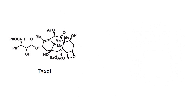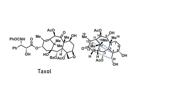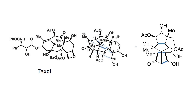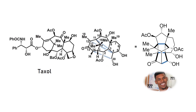What happens if we up the ante? Take the already colossal Taxol framework and introduce three random additional carbon-carbon bonds between centers. What might remind you of the houses that you drew without lifting your pencil when you were a small child is actually a legitimate molecule called Canataxpropellane, first isolated from the needles of the Canadian Yew in 2007.